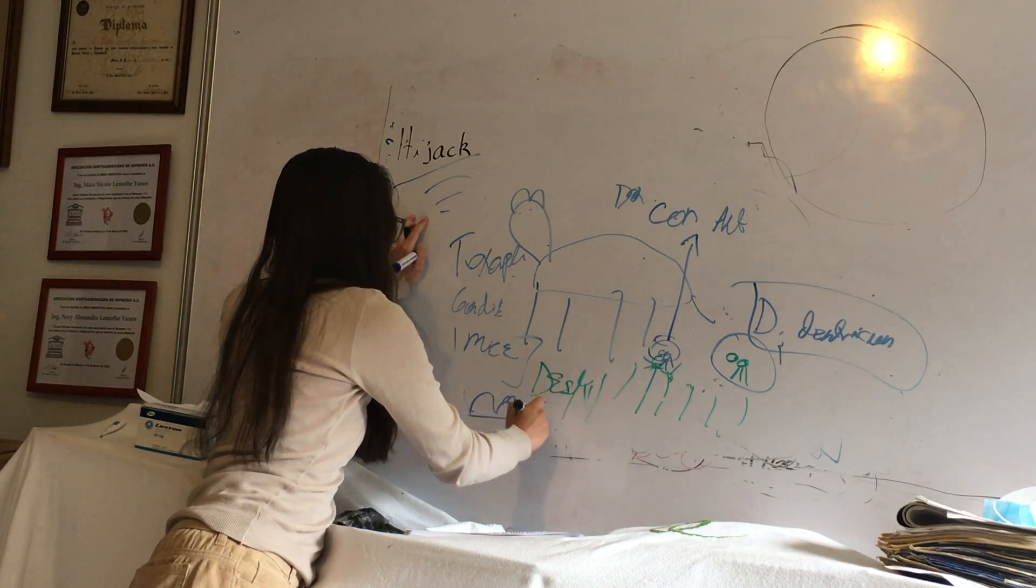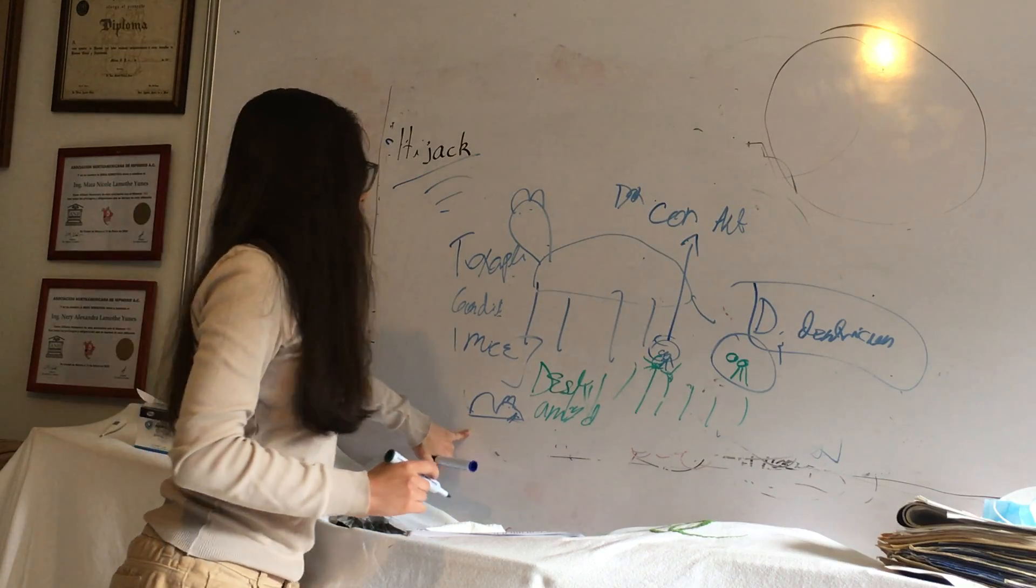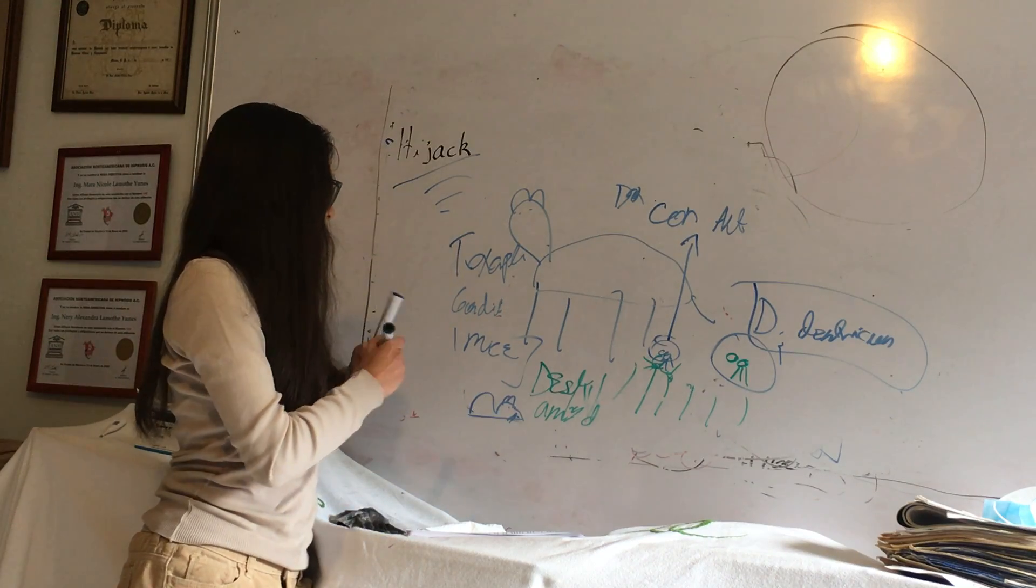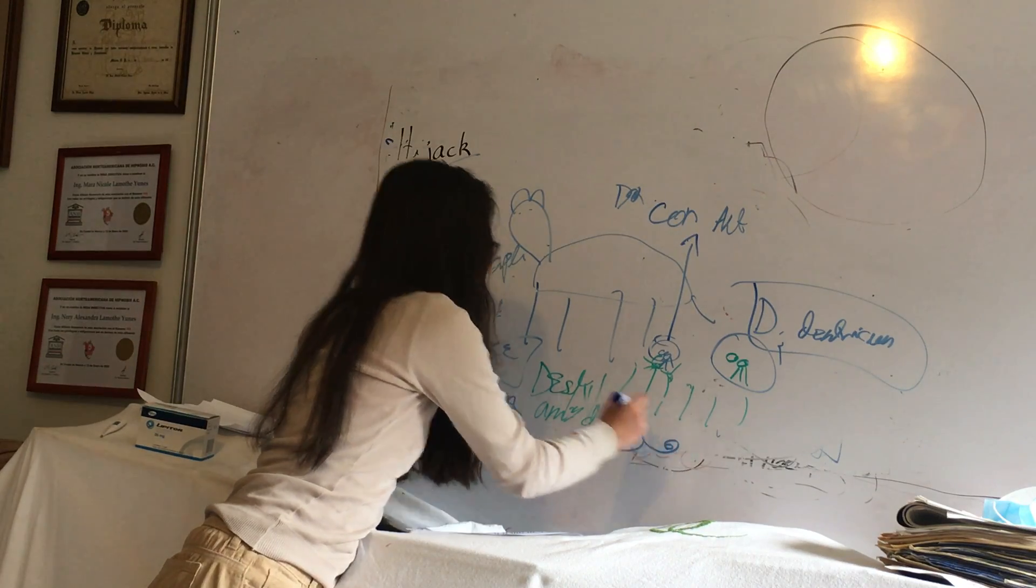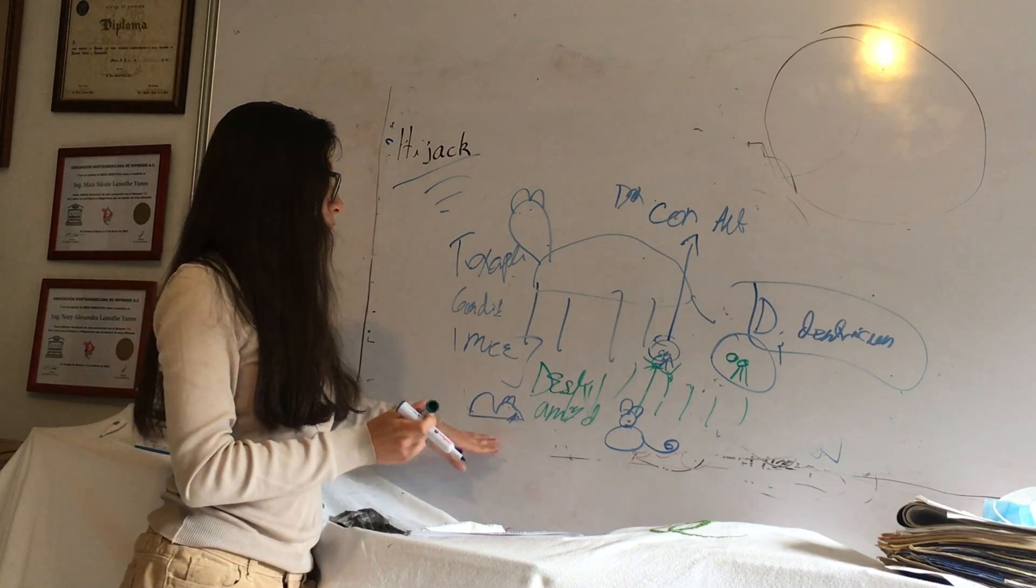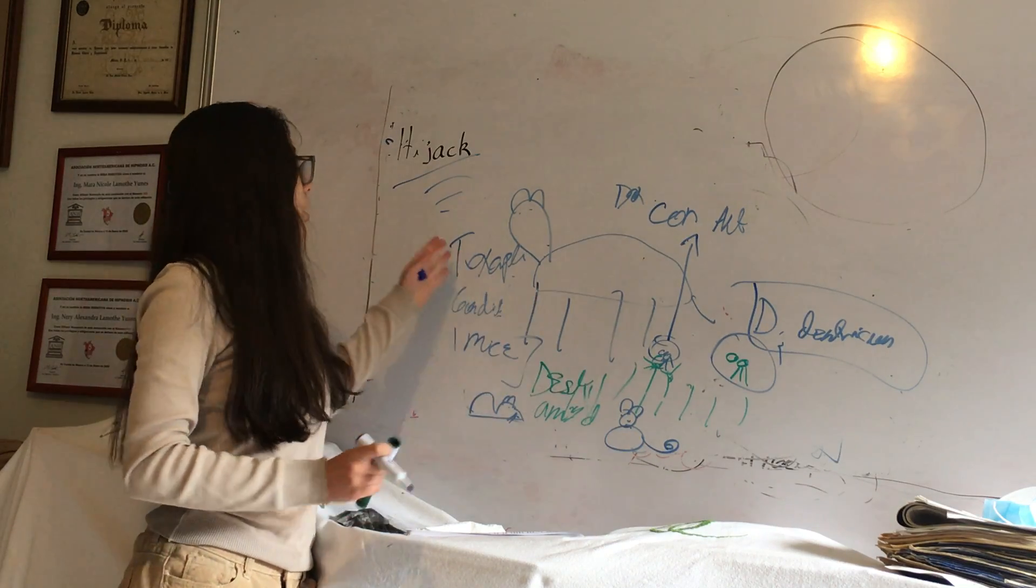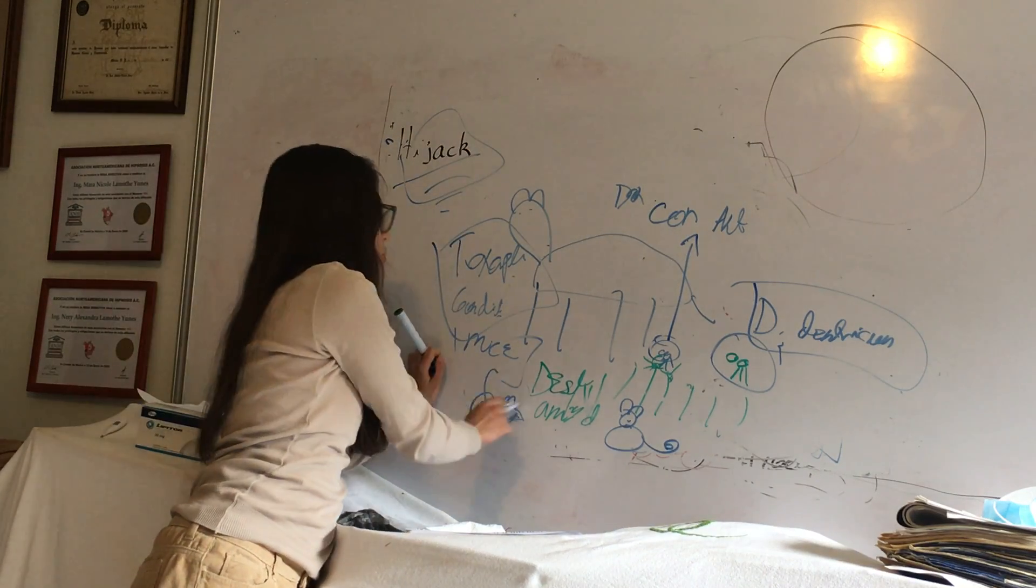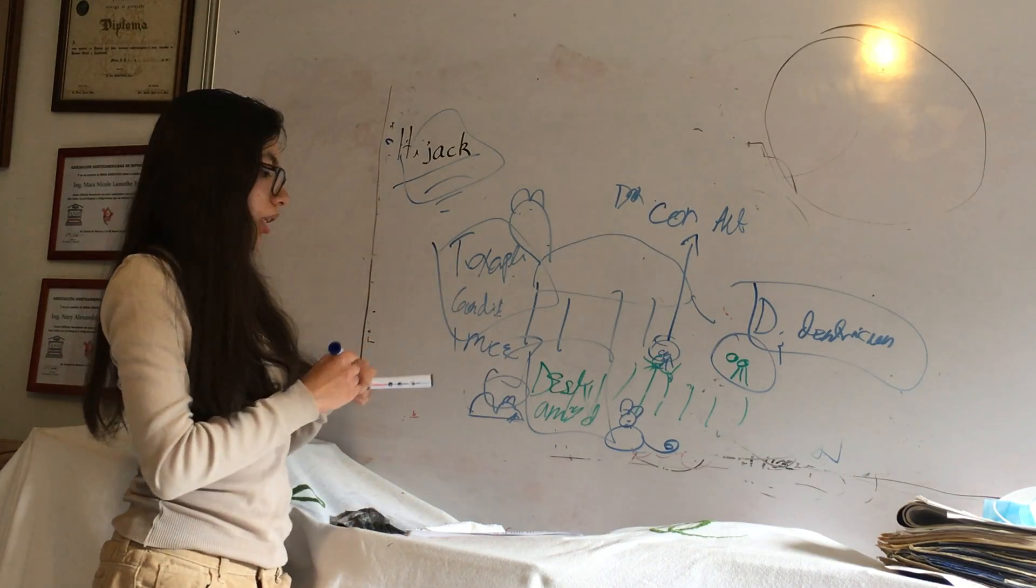If it destroys the amygdala, remember that the amygdala is the center of fear. So if the mouse doesn't have amygdala, it is not going to be scared of anything. If the mice meet with a cat, here's a cat, the mouse is not going to go away because now it has no fear or no scare of the cat. So here, Toxoplasma gondii is hijacking or manipulating the mind of the mouse because it destroys the amygdala. That is hijack, and that is what we're saying here.